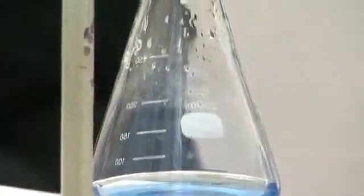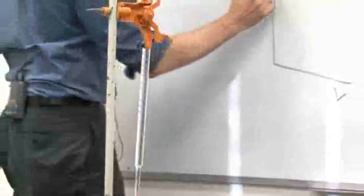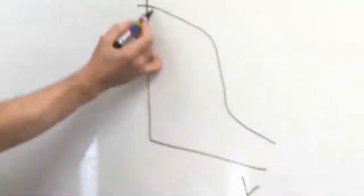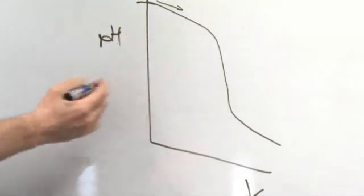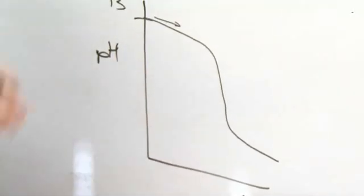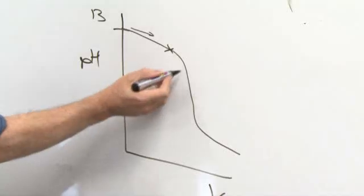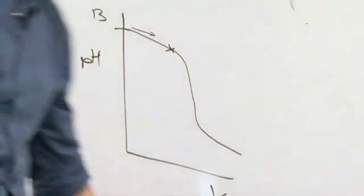Just remember your graph. Volume, pH. We started off with the base, so the pH was up here, roughly around 13. The pH does this. So we're moving along in this direction. When those yellow, when that yellow solution floats around for a while, it means you're getting close to the drop off. So you swirl. You just check the volume.